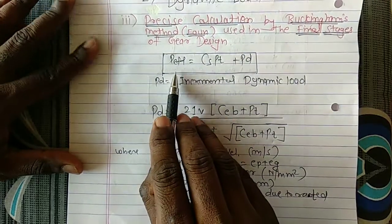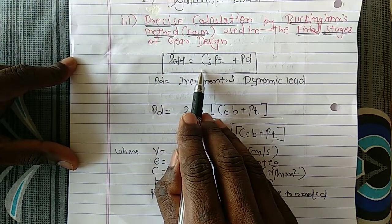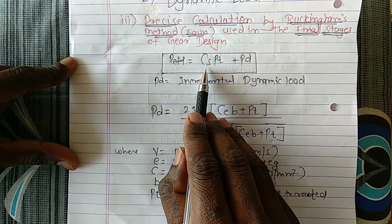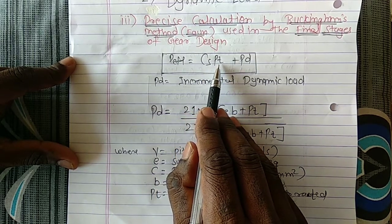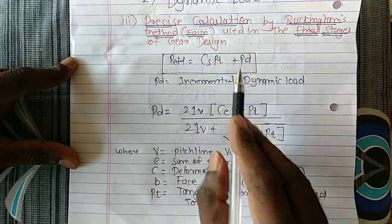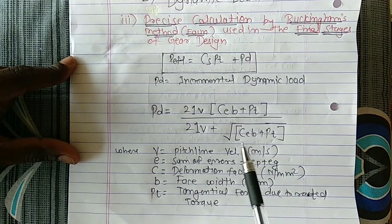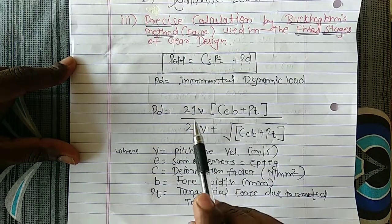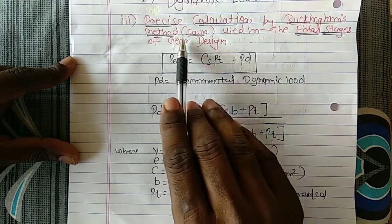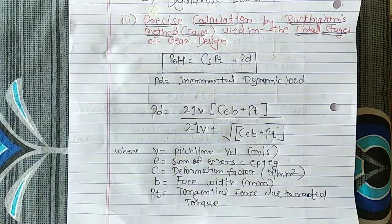To calculate P_effective using Buckingham's method: calculate C_S from the ratio of maximum torque to rated torque, or use the value given in the problem. Calculate P_T = 2M_T / d'. Then calculate P_D using the Buckingham equation. Substitute into P_effective = C_S × P_T + P_D. This method is called Buckingham's method for precise dynamic load estimation. Thank you.